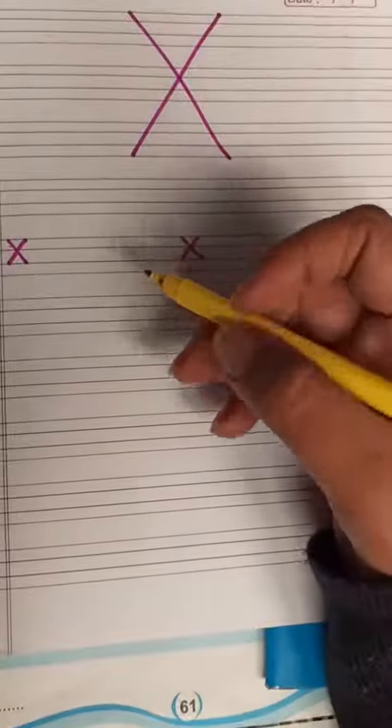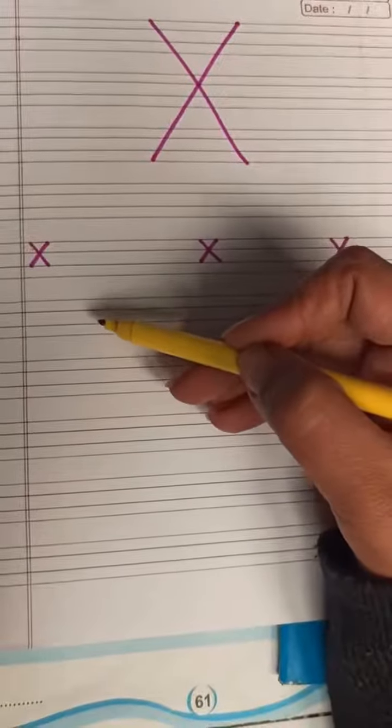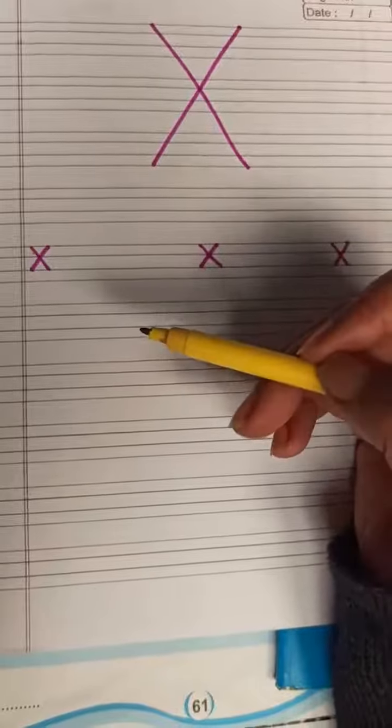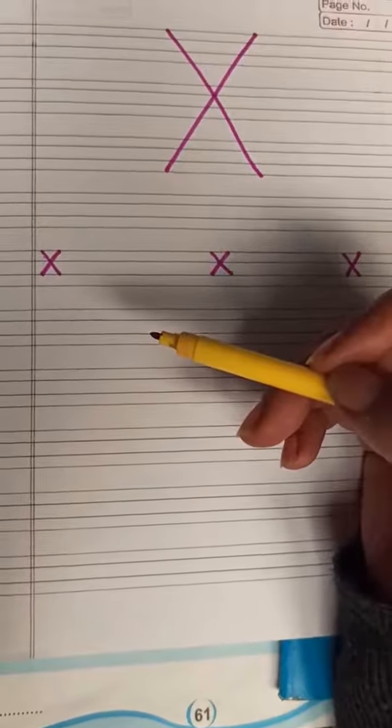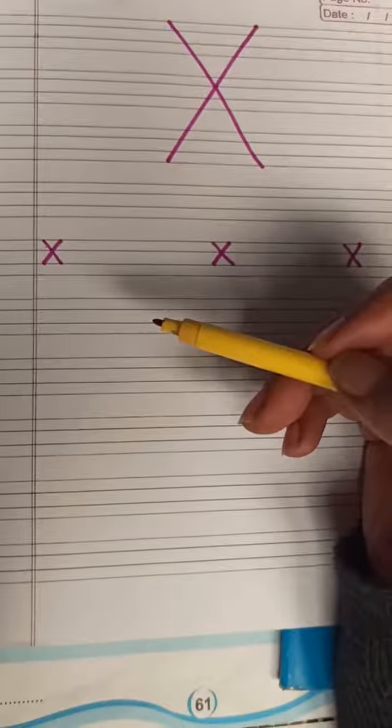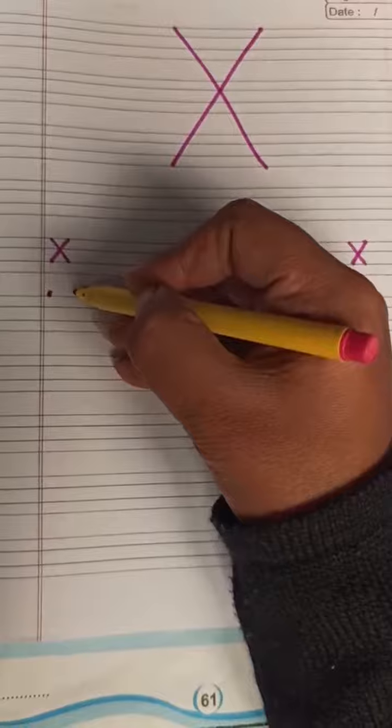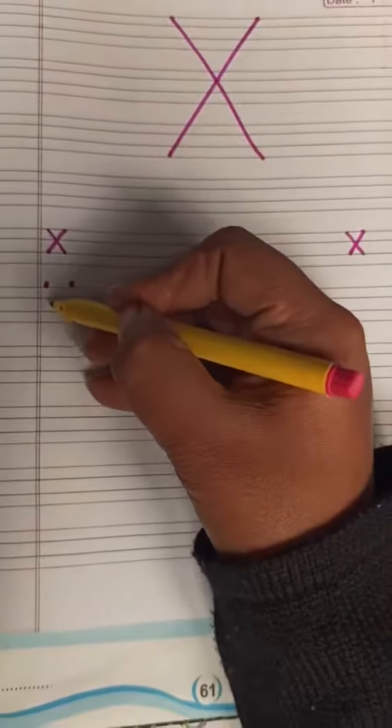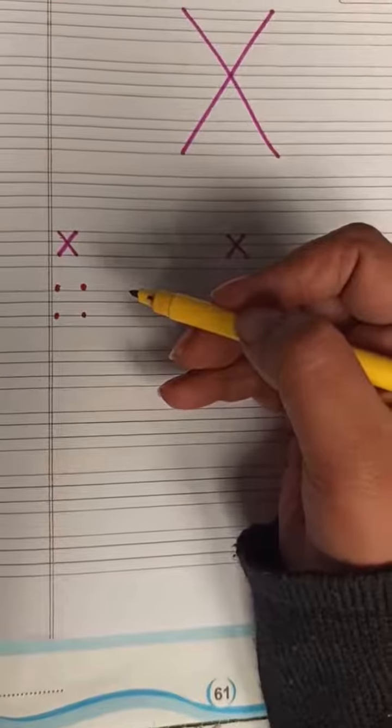How many lines are there? 1, 2, 3, 4. And now, we will put dots. So, how many dots we will put for X? Let's see. 1, 2, 3, 4. How many dots we will put for X? 4.